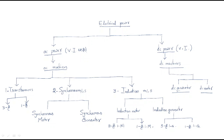Synchronous machines are those which rotate at synchronous speed. They are divided into two types: synchronous motor and synchronous generator. The synchronous generator is also known as an alternator. Almost 80% of generators in our electrical system are alternators, i.e., synchronous generators, because they have the advantage of producing constant frequency at synchronous speed.